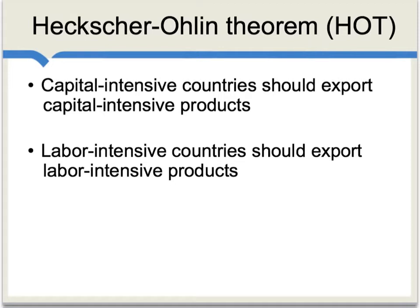You can think of these propositions as a way of making the theory of comparative advantage a little more concrete. For instance, if your country has a lot of capital relative to global standards, you might expect that, all other things being equal, that country will be very good at exporting capital-intensive products. That's the hypothesis which the Heckscher-Ohlin theorem is directing our attention to.